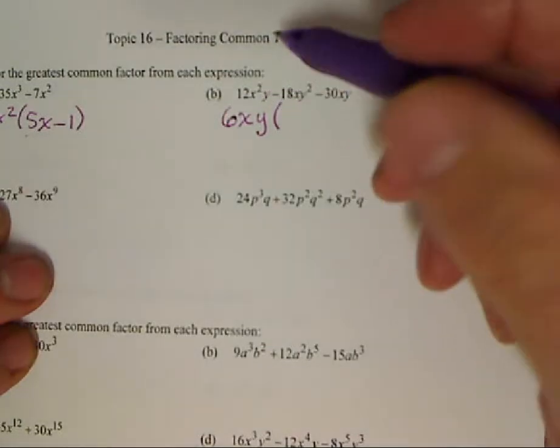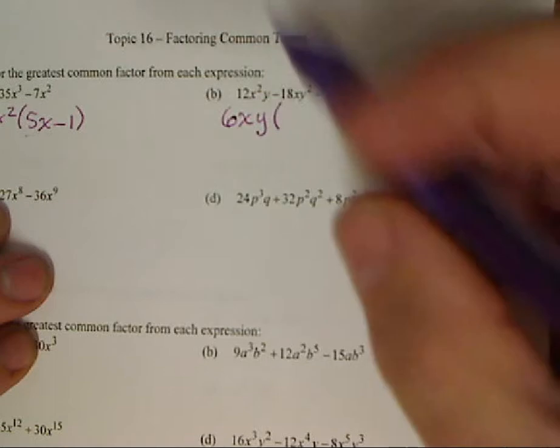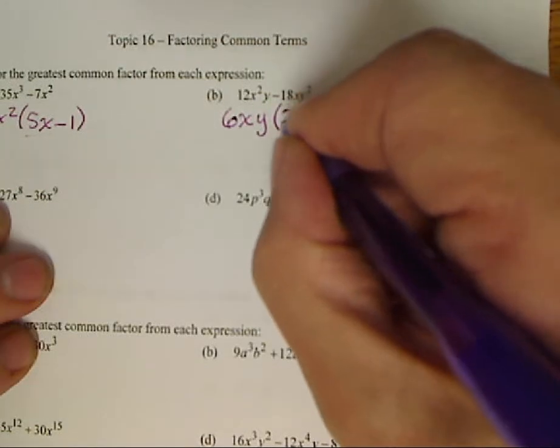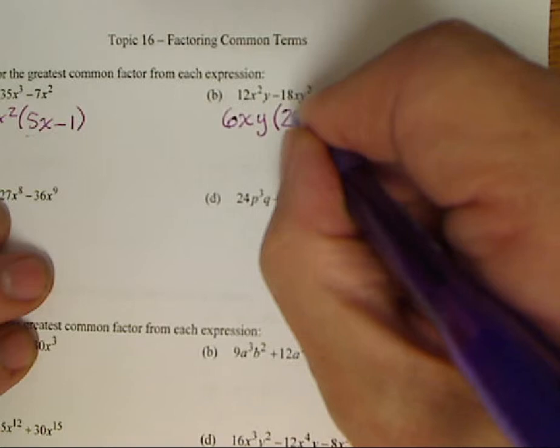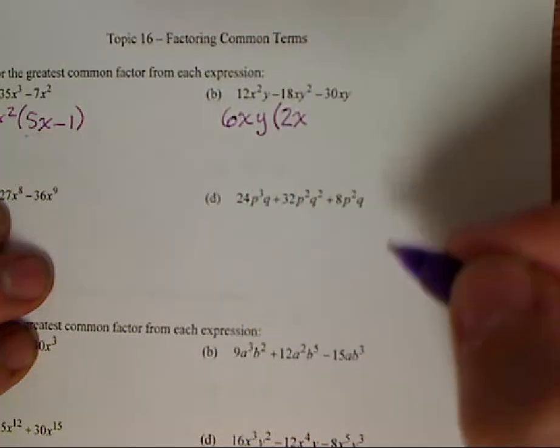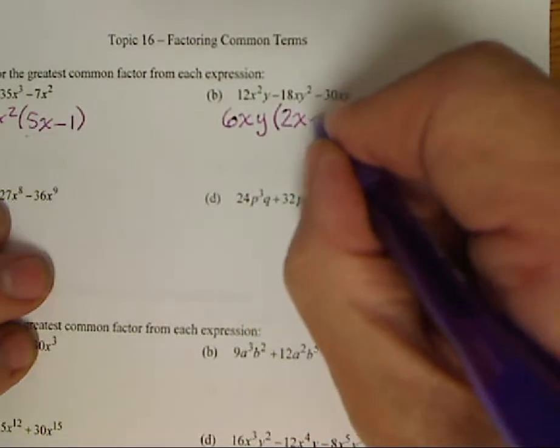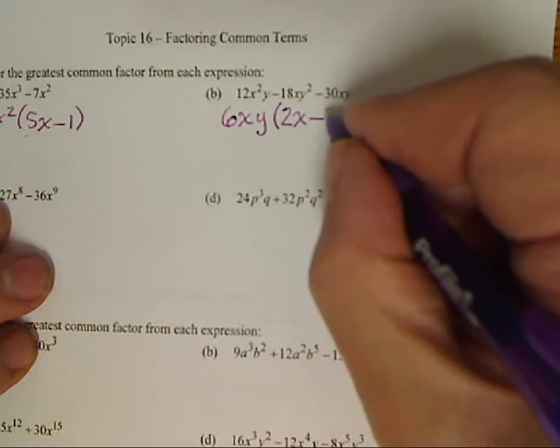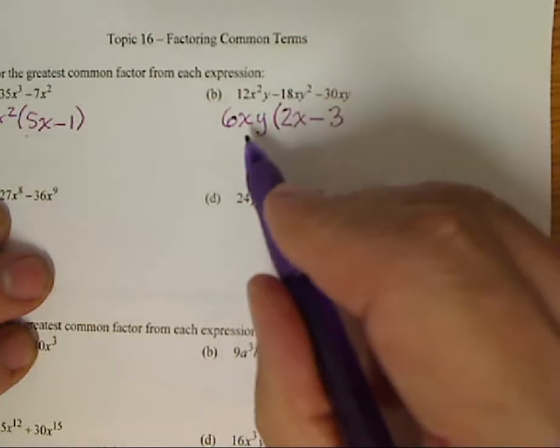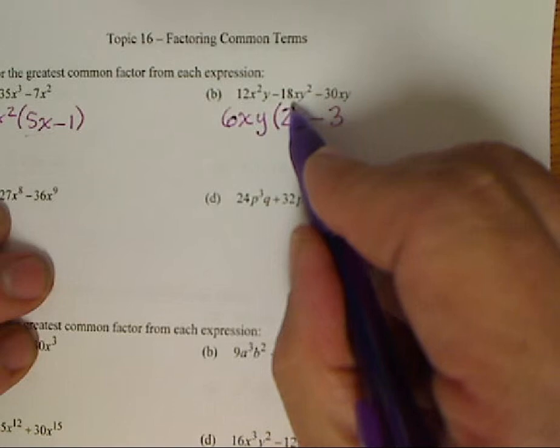Then I think about again, what do I multiply by? So 6 times 2 will give me 12. x times x will give me x squared. I already have the y. Minus 6 times 3 will give me 18. I have x times 1, so I need more x's.